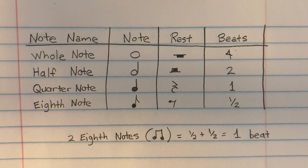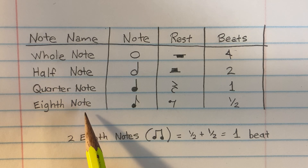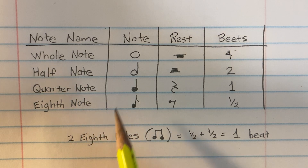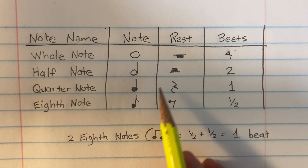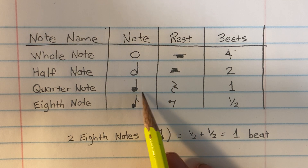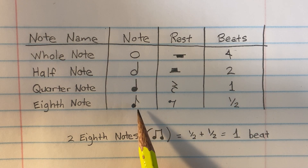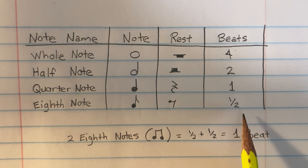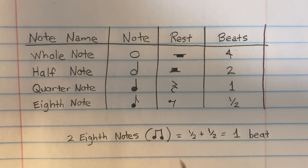Hi guys, today we're going to talk about how to do a rhythm composition. The notes we have are the whole note, half note, quarter note, and eighth note. For this composition we are only going to be using half notes, which have two beats, as well as a half rest, quarter notes and quarter rests which equal one beat, and eighth notes which equal half a beat. Two eighth notes together equal one beat, counted as 'ta-te.'